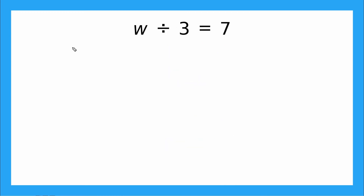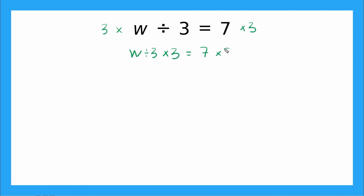This one says W divided by three is equal to seven. We have division in our problem, but our goal is still the same — we want to solve for the variable W, getting W all alone on one side. How can we undo divided by three? We can multiply by three. So I'm going to write times three on the left side, and I also have to multiply the right side by three.